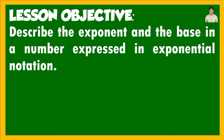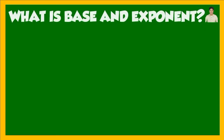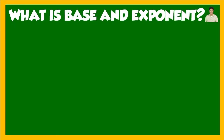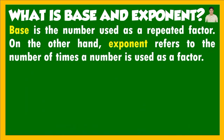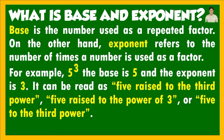Let us first discuss the definition of base and exponent. Base is the number used as a repeated factor. On the other hand, exponent refers to the number of times a number is used as a factor. For example, five cubed — the base is five and the exponent is three. The five serves as the base; from its definition, base is the number used as a repeated factor.